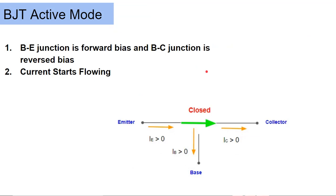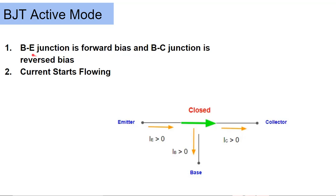The next mode is active mode. In active mode, the base-emitter junction is forward biased and the base-collector junction is reverse biased, and current starts flowing. Here you can see that if we forward bias the base-emitter junction, current starts flowing. The base-collector junction remains the same as in cutoff mode — we just forward bias the base-emitter junction. So this junction is reverse biased and the base-emitter junction is forward biased — then why does the current start flowing?